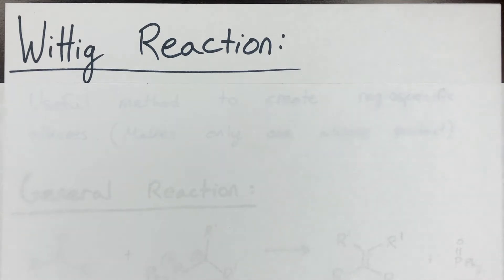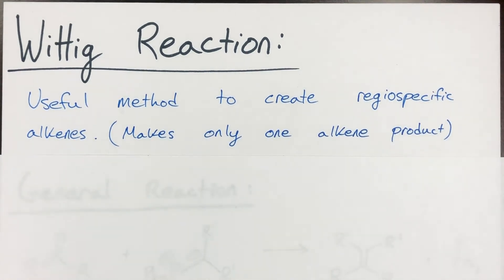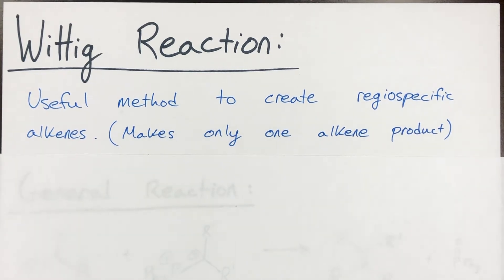In this video, we'll take a look at the Wittig reaction — the W in Wittig is pronounced as a V because the person who invented this was German. The Wittig reaction is a useful method to create regiospecific alkenes. This means that you make only one alkene product in terms of bond connectivity — which carbons are bound to which carbons. There are stereochemical outcomes; it can be E or Z stereochemistry, but the regiochemistry is always the same.